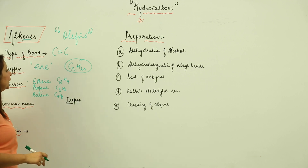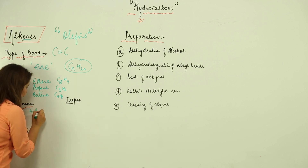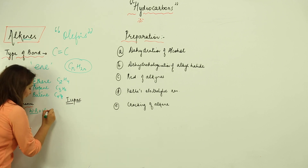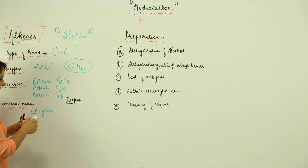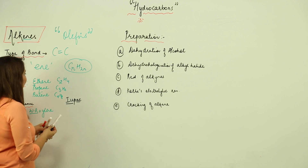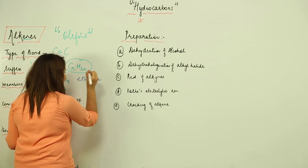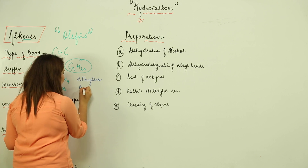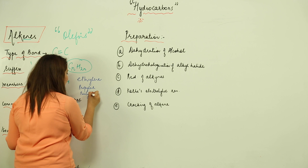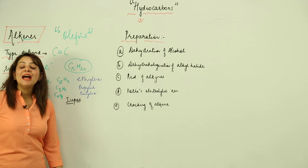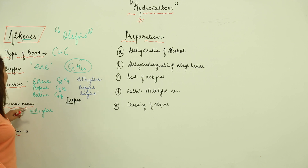For the common name of alkenes, we take the word root and add '-ylene' to it. For example, ethene becomes ethylene, propene becomes propylene, butene becomes butylene, and so on. So you just need to add Y-L-E-N-E to the word root.